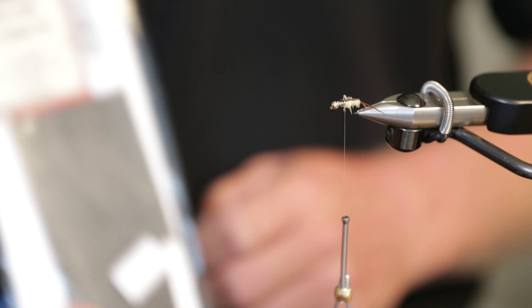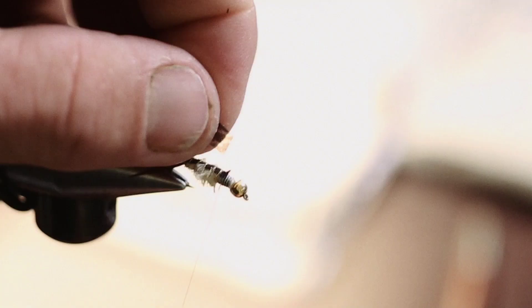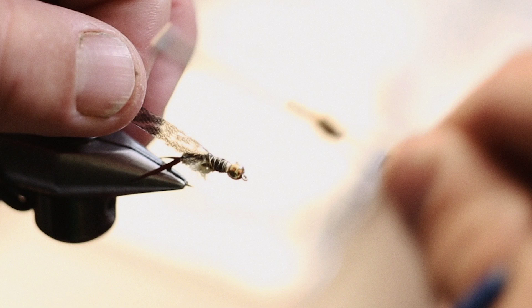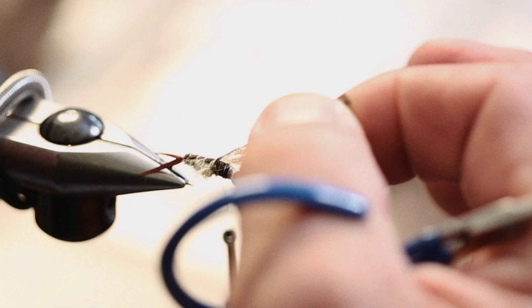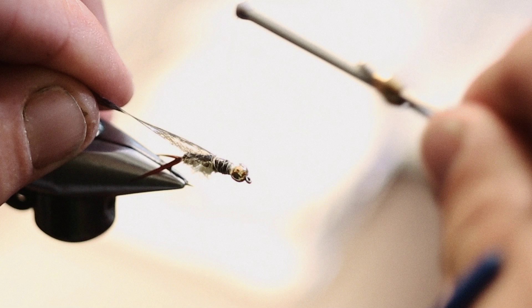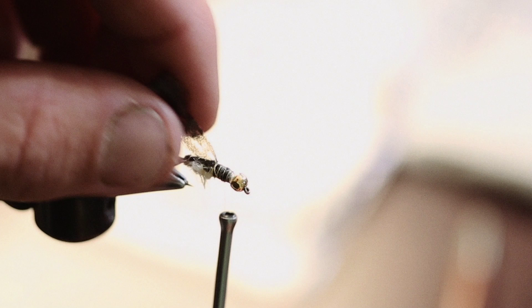Then we're going to take some mottled bustard colored thin skin. That's going to be our wing case. It's going to give us a little bit of shine, a slight flash. But the main thing is it's going to give us a nice durable wing case. I'm actually going to wrap back over the turkey and the yellow CDC dubbing a little bit because I want to make sure I have a nice pronounced wing case. It should be a good size because stoneflies have very large wing cases.